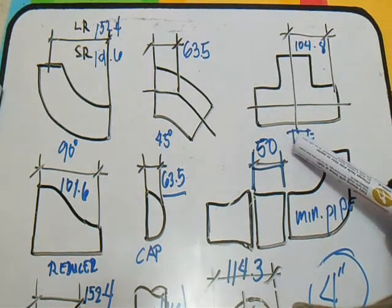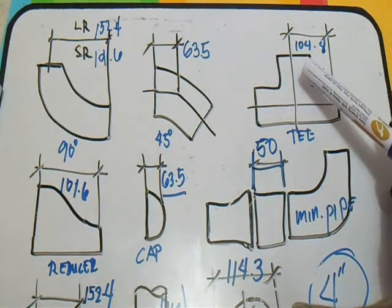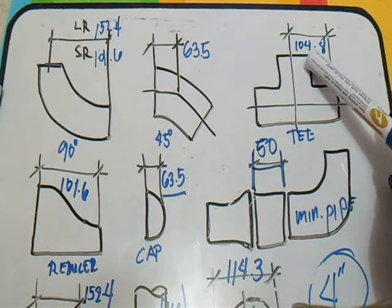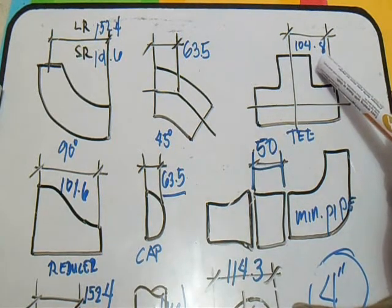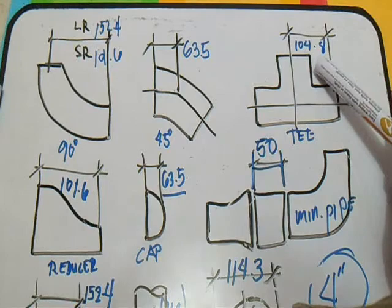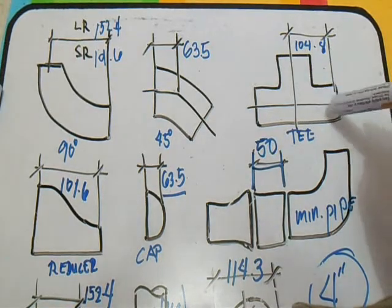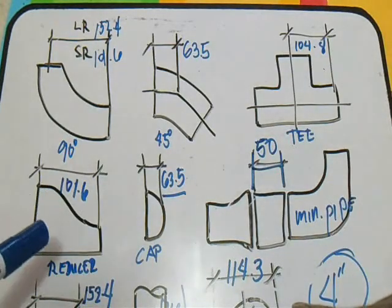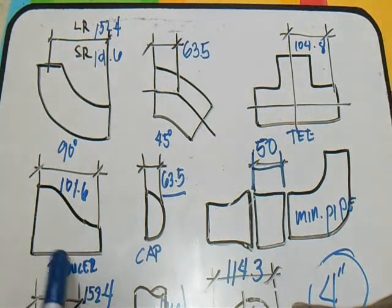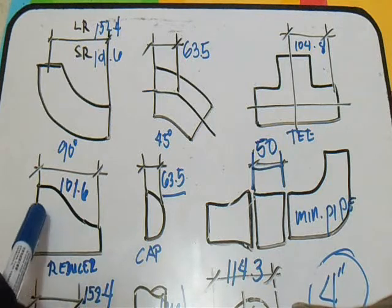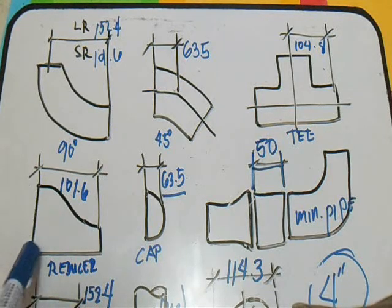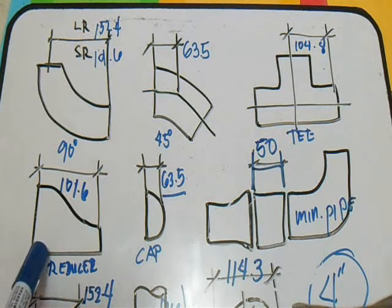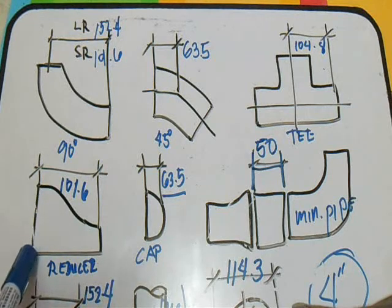And then the tee, our takeoff for the 4 inch is 104.8. Our takeoff for this tee in the 4 inch.